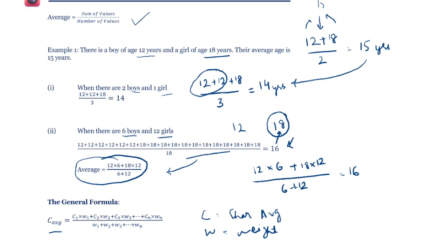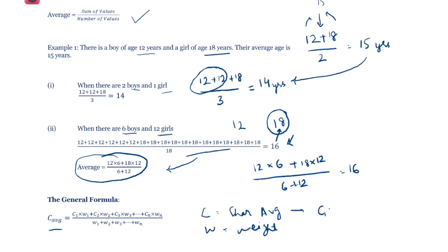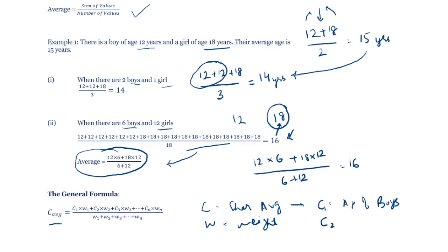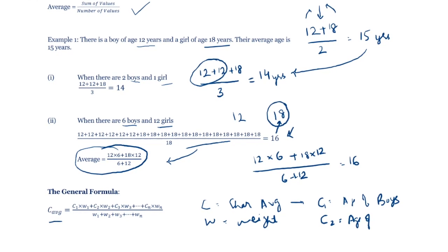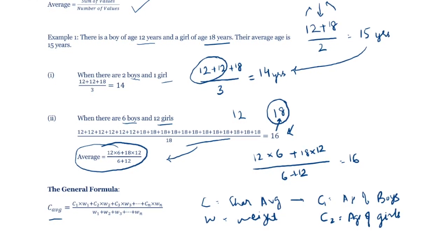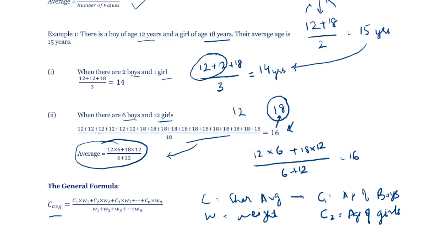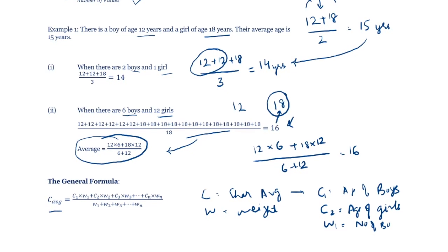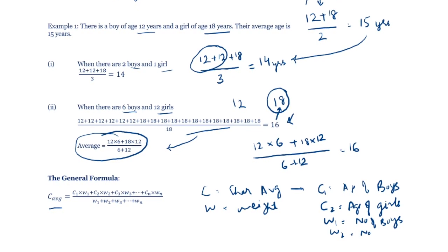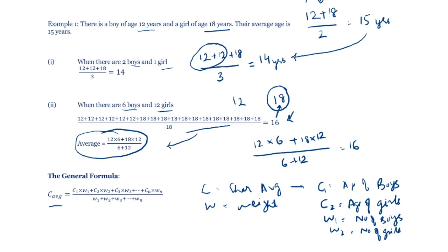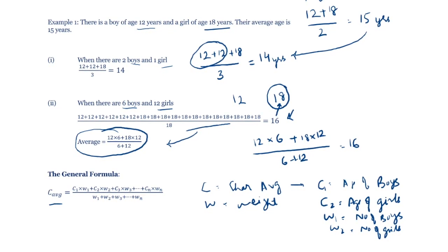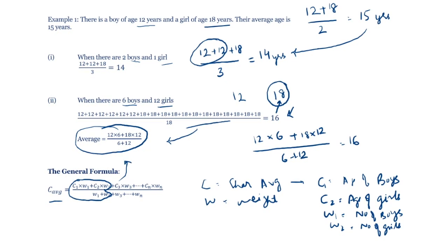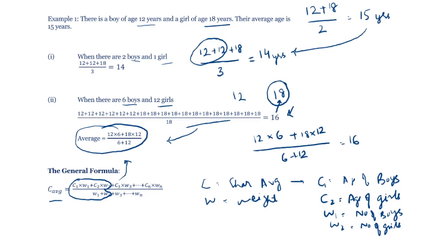Here, c1 was the age of boys and c2 was the age of girls. w1 was the number of boys and w2 is number of girls. Notice that this is exactly what we have done. If you have more instances, you can keep adding c3, c4, c5, etc.